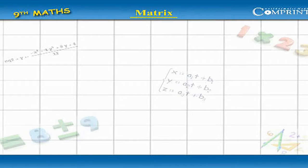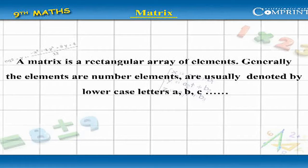A matrix is a rectangular array of elements. Generally, the elements are numbers. The elements are usually denoted by lowercase letters a, b, c, and so on.